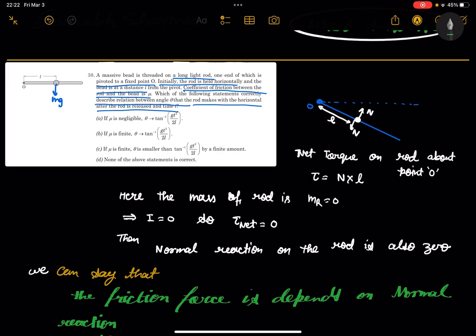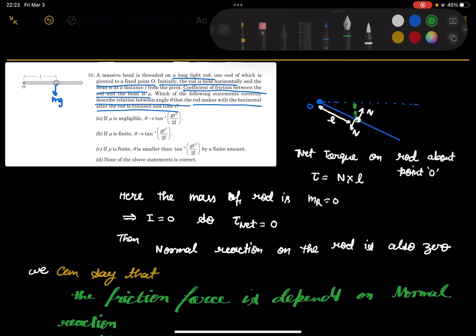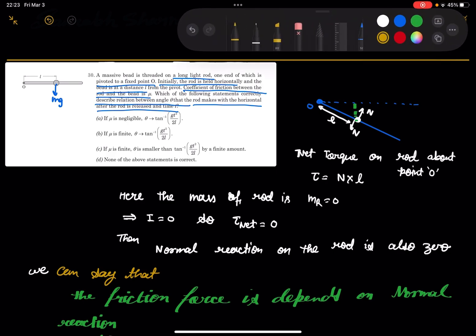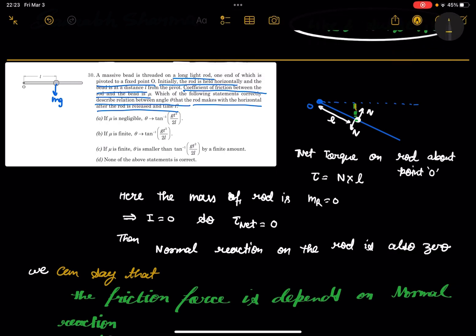Mu is finite, mu is not infinite. The theta does not depend on friction force. So if theta does not depend on the friction force, then only one force is acting. That is called, here, you can say that if I am talking about this line.